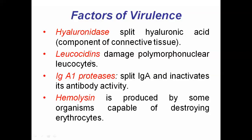Another virulence factor is leukocidins — compounds which can damage PMN (polymorphonuclear leukocytes). Poly means many, morpho means morphology, nuclear means nucleus, and leukocytes are a type of WBC. These WBCs have nuclei with many different morphologies, which is why they are called polymorphonuclear leukocytes. Another virulence factor includes immunoglobulin A1 proteases, which break down immunoglobulin A (antibody A) and inactivate the activity of these immunoglobulins.